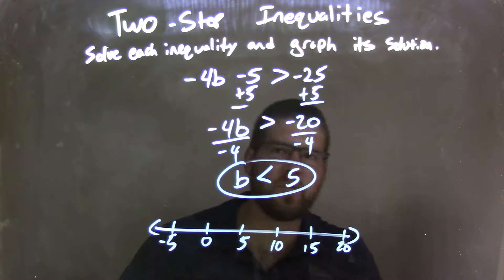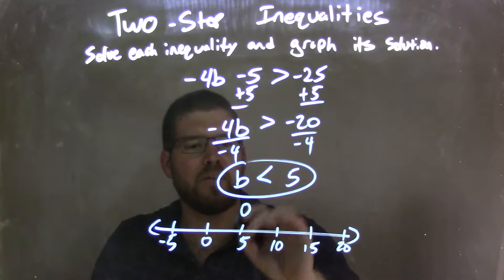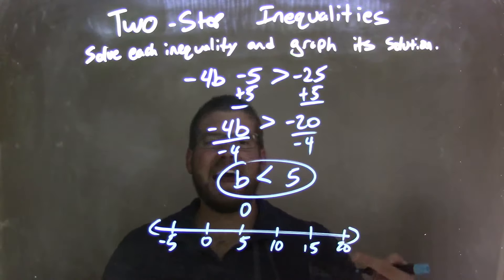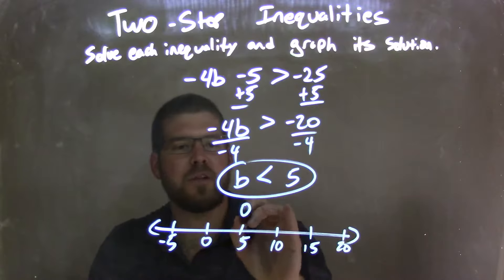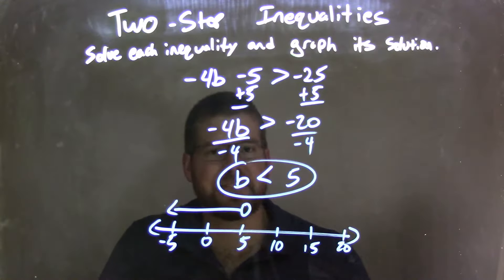Well, they said b is less than 5, not equal to, but just less than. So since it's not equal to, we have an open circle there at 5, and then I'm going to put my arrow to the left showing that b is less than 5. And now we have our graph that matches our final answer of b is less than 5.